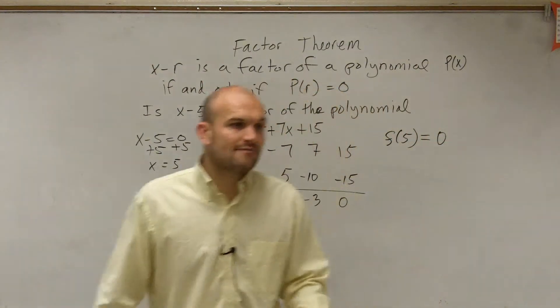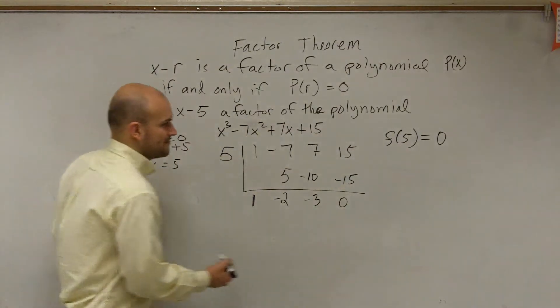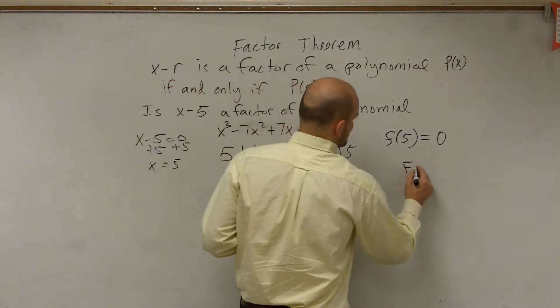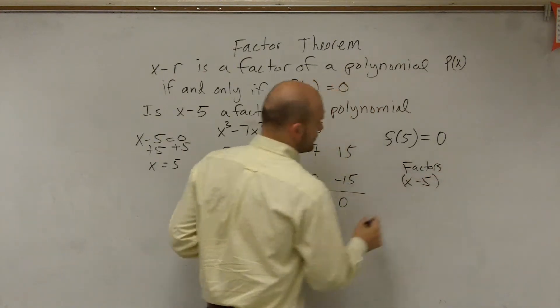So what we have is we have a remainder. So now we know that x minus 5 is a factor. So our factors are x minus 5.